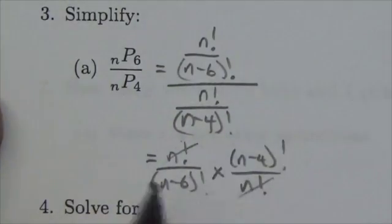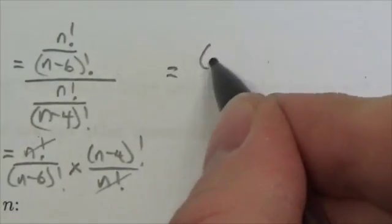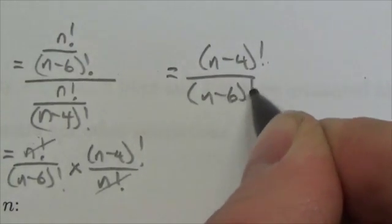Now, I'm going to come up here. That means that this expression here becomes n minus 4 factorial over n minus 6 factorial.